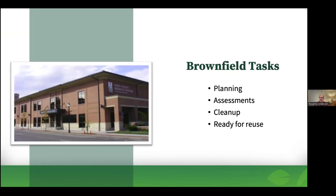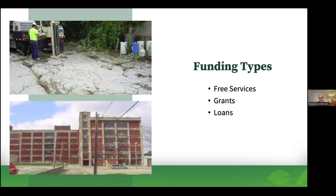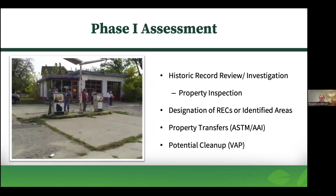In the Brownfield world, there's usually a general range of tasks that need to happen. The planning process usually comes first. You typically need to go through assessments to assess the property, get it cleaned up, and then get it ready for reuse. During those four tasks, there's funding available to help. A lot of times there are free services out there, along with grants and loans with very low interest rates for communities that have the capacity.